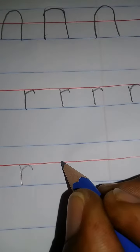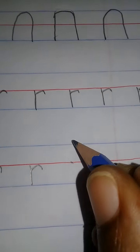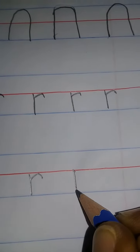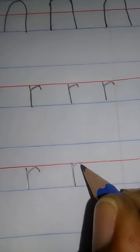So remember boys and girls, halfway in between the two blue lines we begin our common R. Down, up, around to the right.